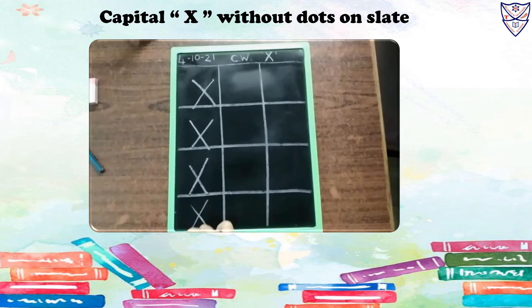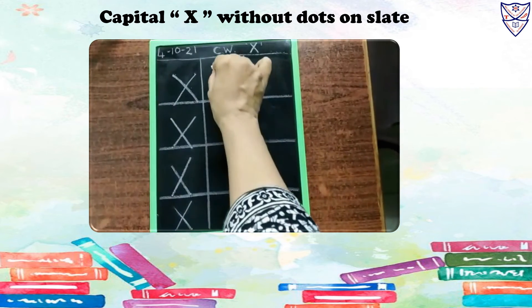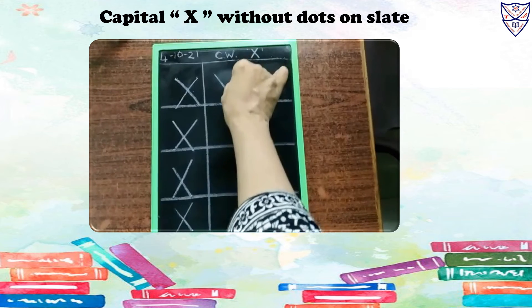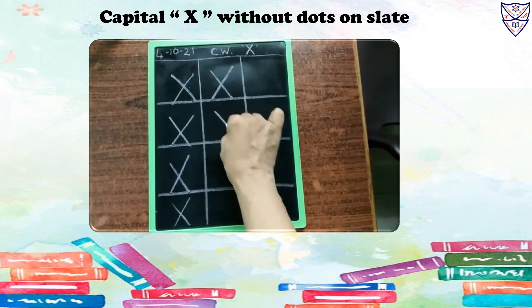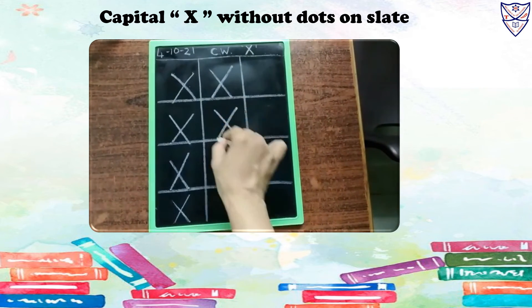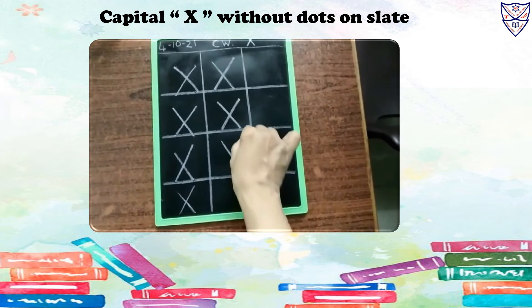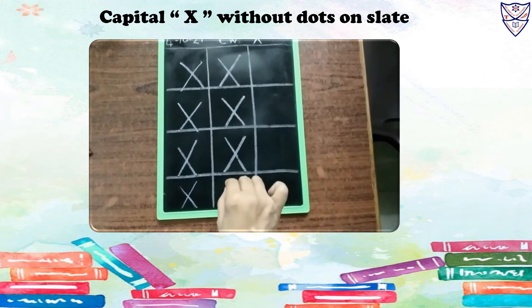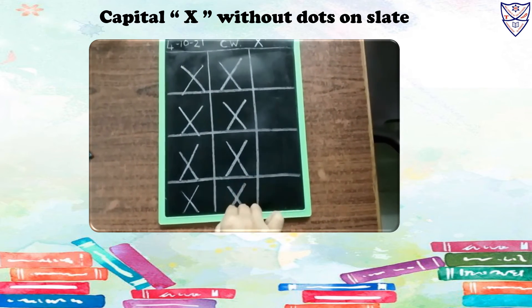Capital X. How you have to write? Draw one slanting line and another slanting line. One slanting line and another slanting line. Like this, by using two slanting lines, we can write capital X.